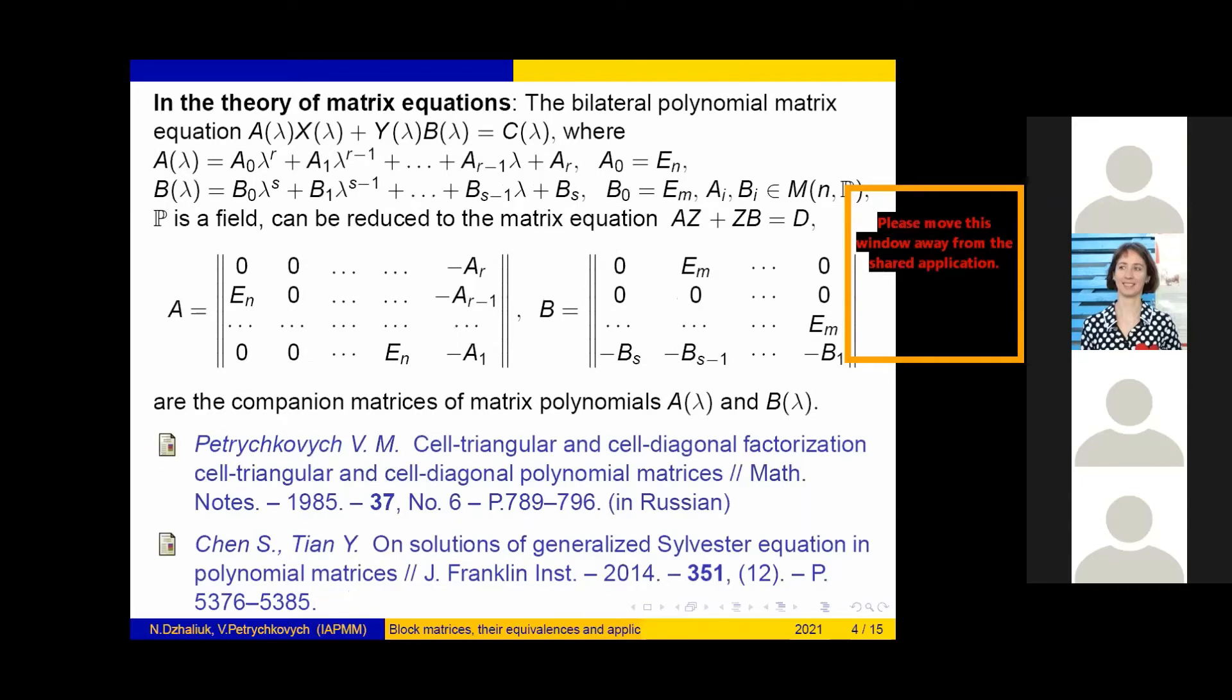The companion matrices were applied by Vasily Mikhailovich Petrychkovych and in the paper of Chen and Tian to the construction of solution of the bilateral polynomial matrix equations A(λ)X(λ) + Y(λ)B(λ) = C(λ).